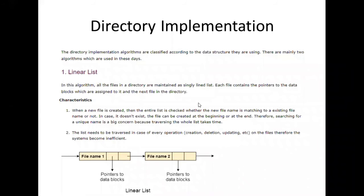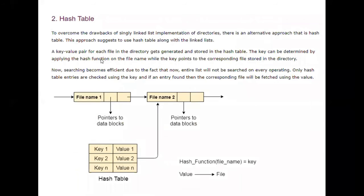After taking down the linear list diagram, we will move forward to the hash table structure. This is the second technique for implementing the file systems. To overcome the drawbacks of single-linked-list implementation of directories, the alternative approach is hash table.